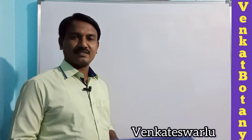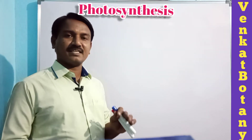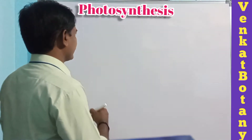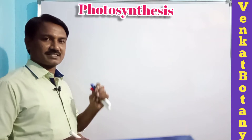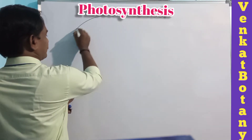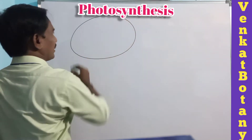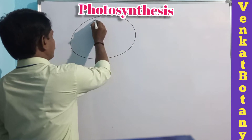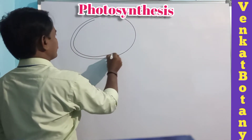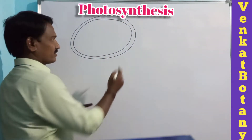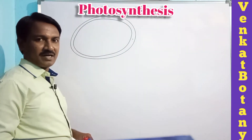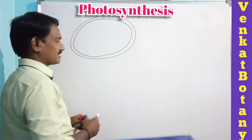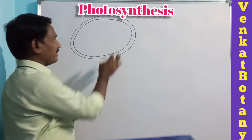In this session our topic is photosynthesis - the light reaction and non-cyclic electron transport system. In photosynthesis, the main cell organelle is the chloroplast. The chloroplast shows two membranes: an outer membrane and an inner membrane. In between the two membranes, an empty space is present called the intermembrane space or periplastidial space.